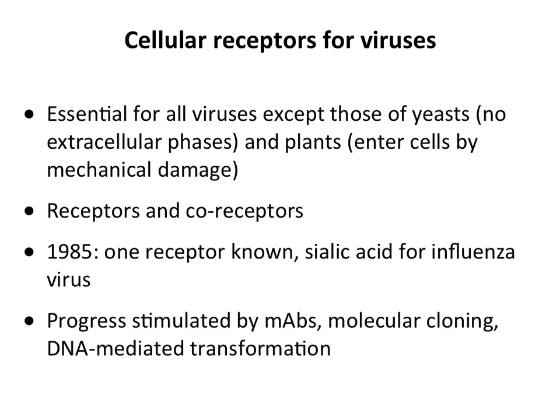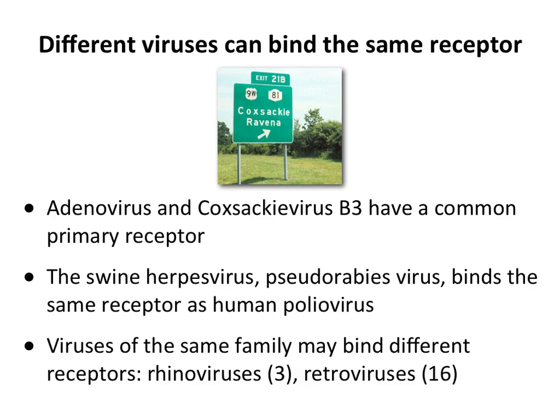As recently as 1985, only one virus receptor was known: sialic acid for influenza virus, a simple sugar. Shortly afterward, advances in monoclonal antibody production, recombinant DNA cloning, and transformation led to identification of hundreds of virus receptors. A few generalities: different viruses can bind the same receptor. For example, adenovirus — the double-stranded DNA sputnik-like virus — uses the same receptor as coxsackievirus, a picornavirus named after Coxsackie, New York, where a paralytic illness outbreak occurred in the 1940s.